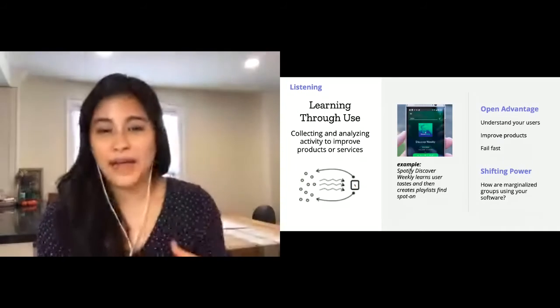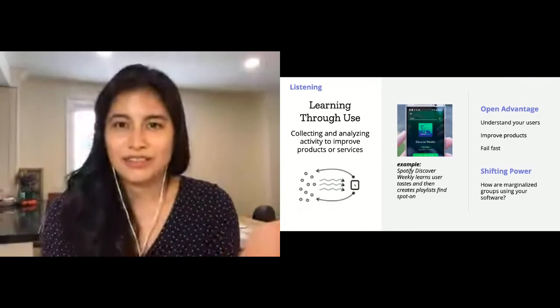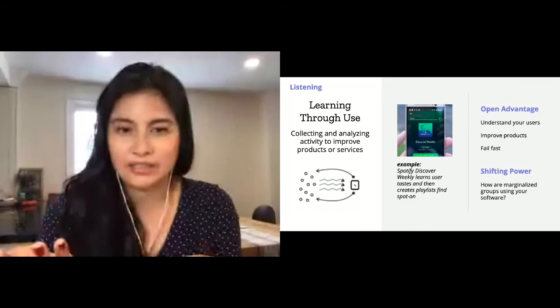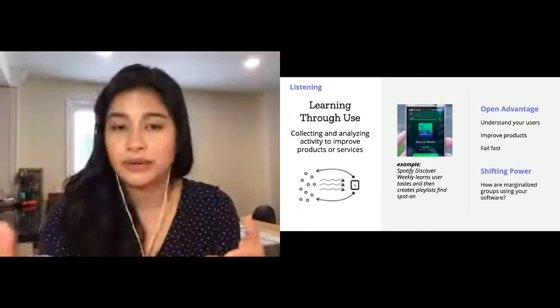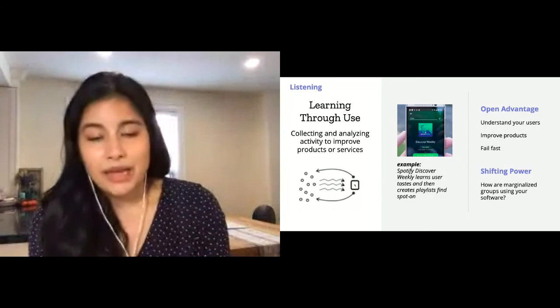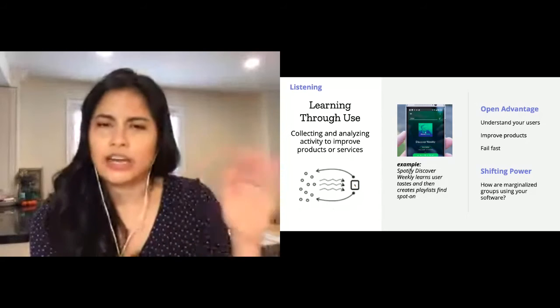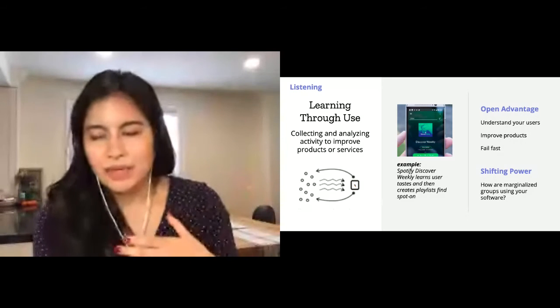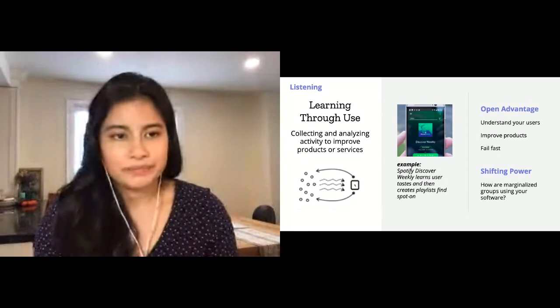I know it's harder to reach out to people not like you, but you can try listening to them. The more passive view of listening is learning through use—collecting and analyzing activity to improve products or services. The example I have there is Spotify Discover. I actually really like Spotify—it knows my listening habits, so then it generates a personalized playlist for me every week. I like it. Open advantages: you understand your users better, you can improve your products, and you can fail fast. If you can see something's not working, you can try something else. But in terms of shifting power, this might be a good way to learn how marginalized groups are using your software and seeing if there's anything you can do to make it easier for them. Just a general caveat in this one: I often get a lot of questions about privacy on this, and obviously get data from people with consent and also be trustworthy. Make sure people understand why you're using their data and that it's actually helpful for them. And yeah, don't sell it.